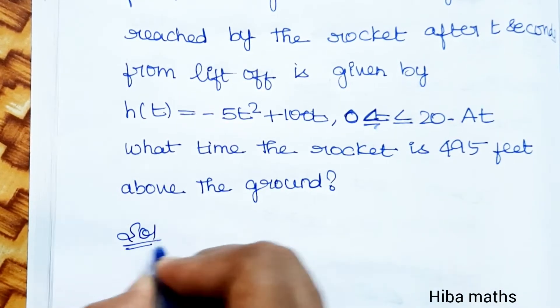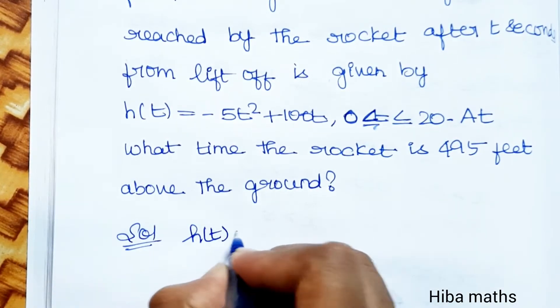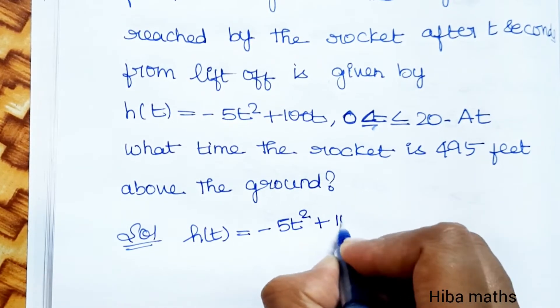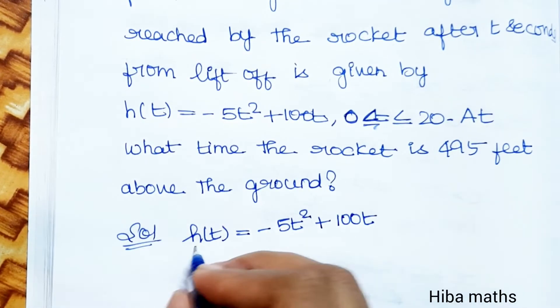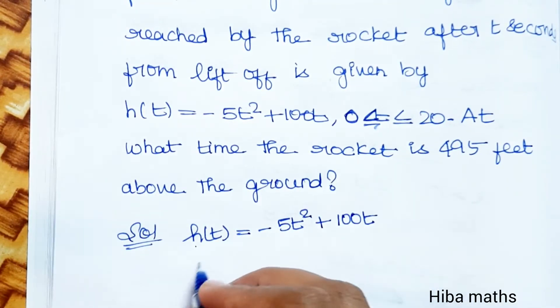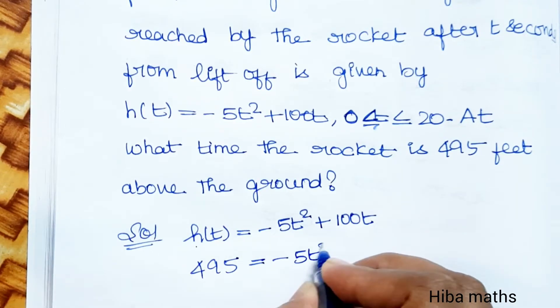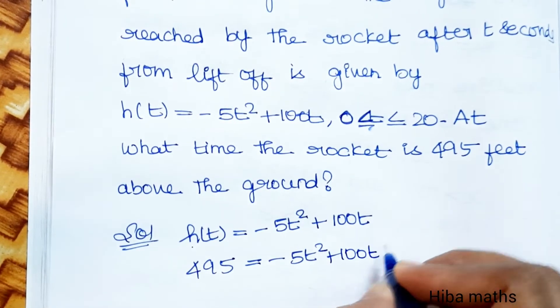The solution: Given h of t equals minus 5t squared plus 100t. We set h of t equal to 495. So 495 equals minus 5t squared plus 100t.